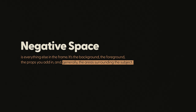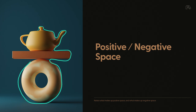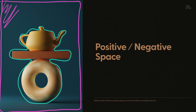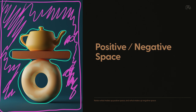Let's take a look at a simple example. What do you think is the positive space, and which do you think is the negative space? The positive space is the object staring right at us — it's the donut shape, the block, as well as the teapot. And the negative space is all this dark teal space around it; it's the background, as well as some foreground.